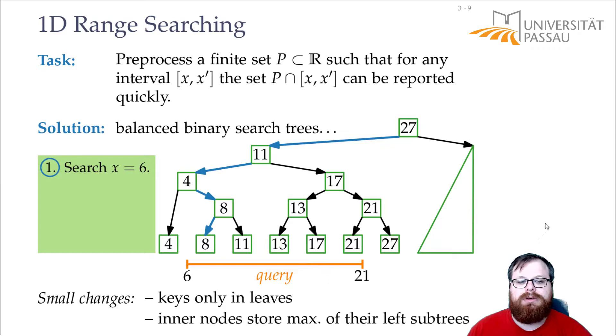Then we can find the end of this interval, so we look for 21. And we do the same thing, we go left, right, and so on, and we find the first number that's 21 or larger. And now we want to report all the leaves that lie between this one that we found and this one that we found.